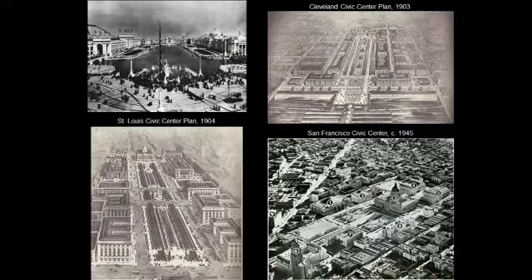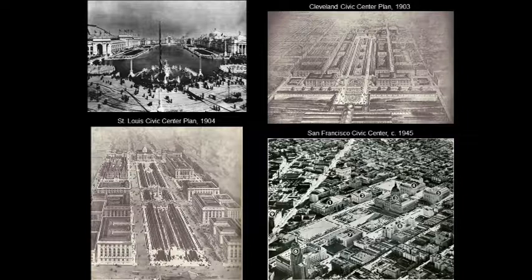Some of the most famous ones are, as we see on the upper right, the Cleveland so-called group plan or civic center of 1903. This was also authored by Burnham along with New York architects Arnold Brunner and John Mervyn Carrere of the New York Public Library. Here again you can clearly see the idea of a central mall, landscaped, and surrounded by complexes of harmonious, conforming buildings.